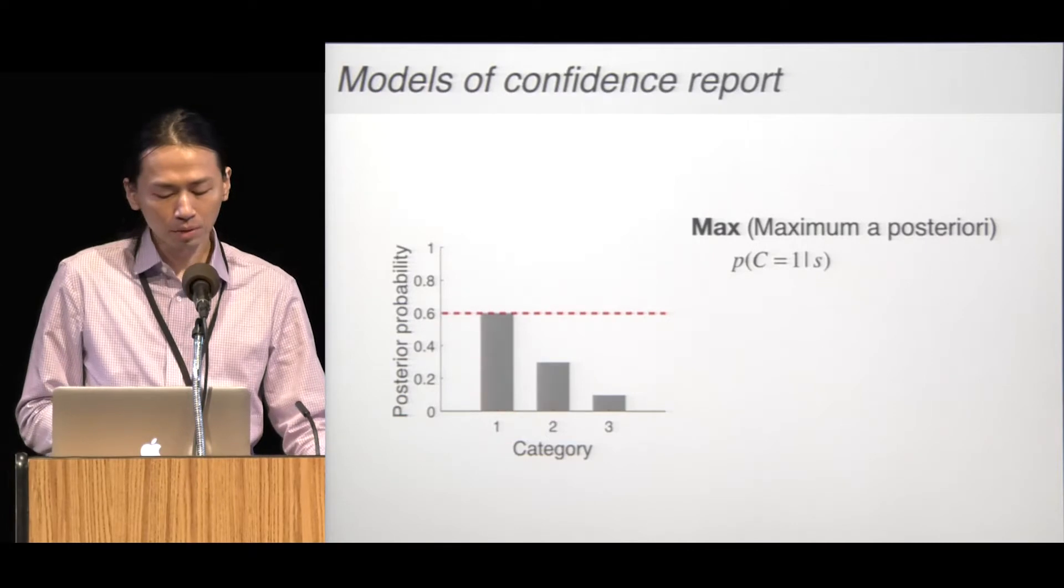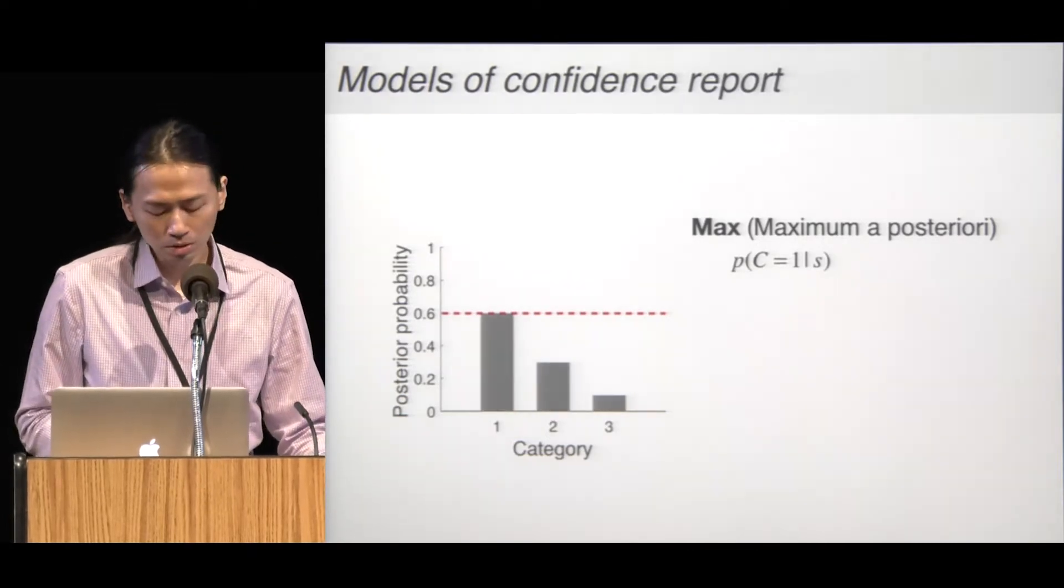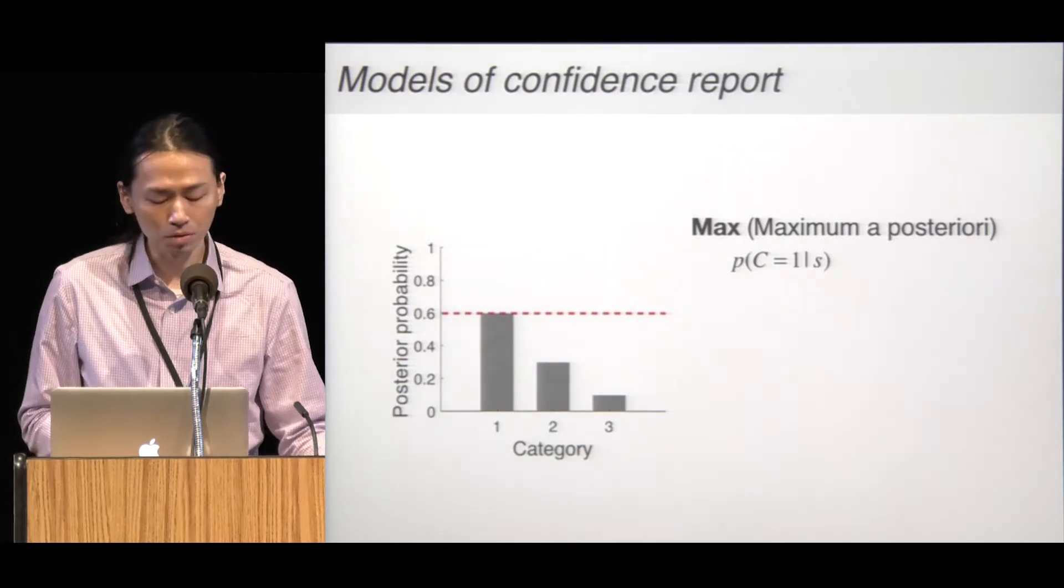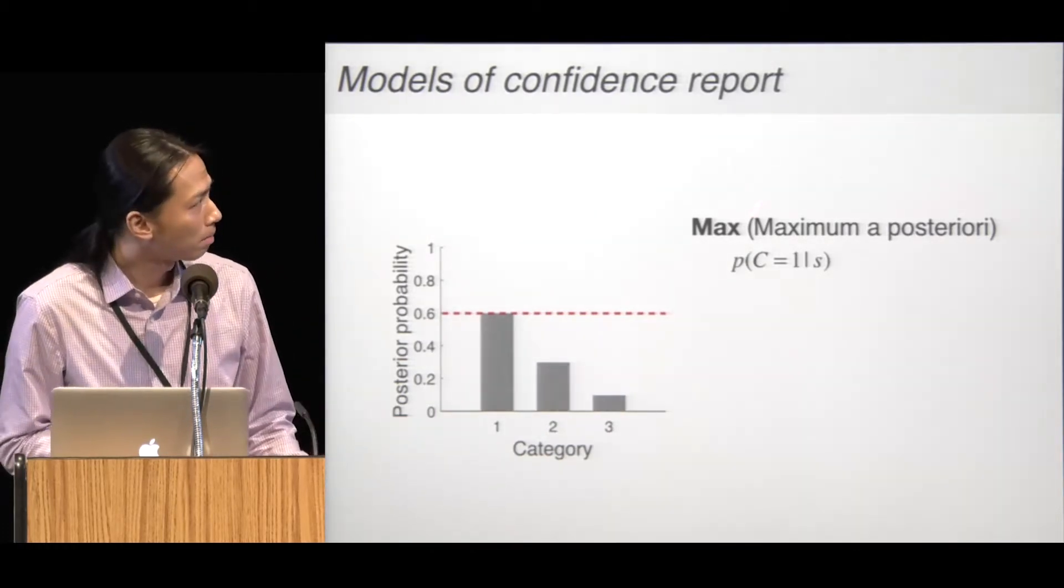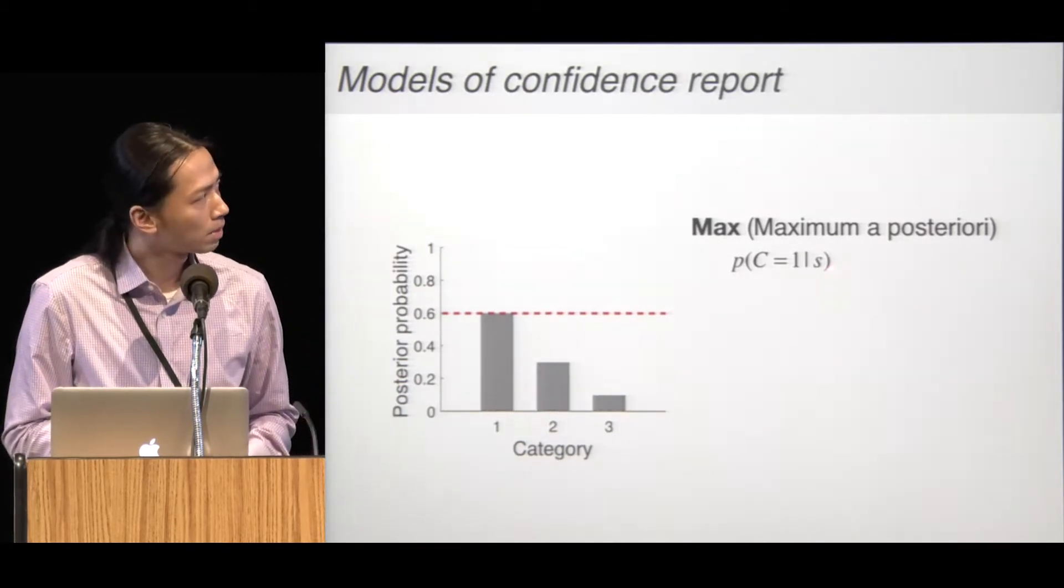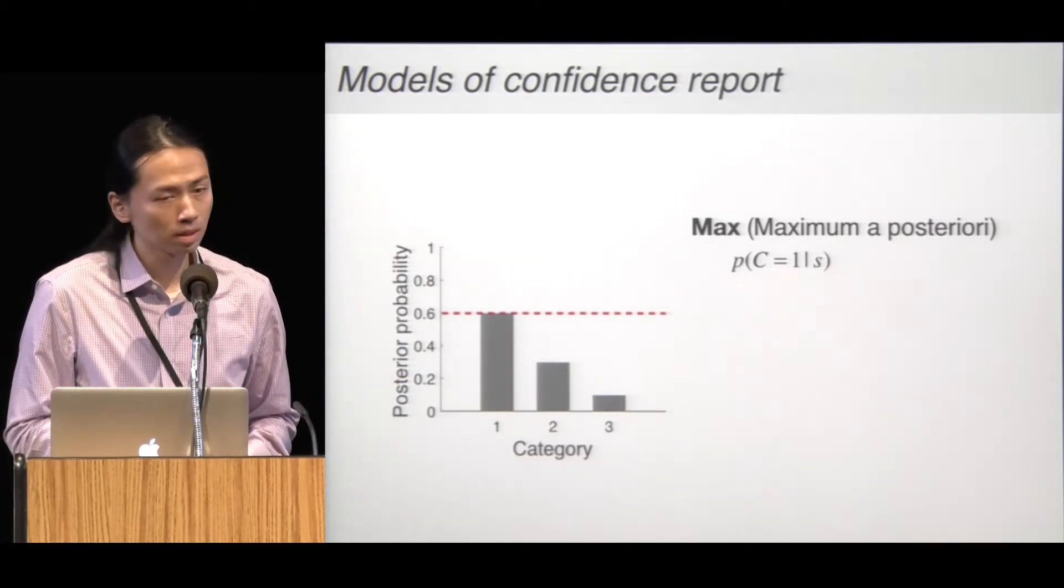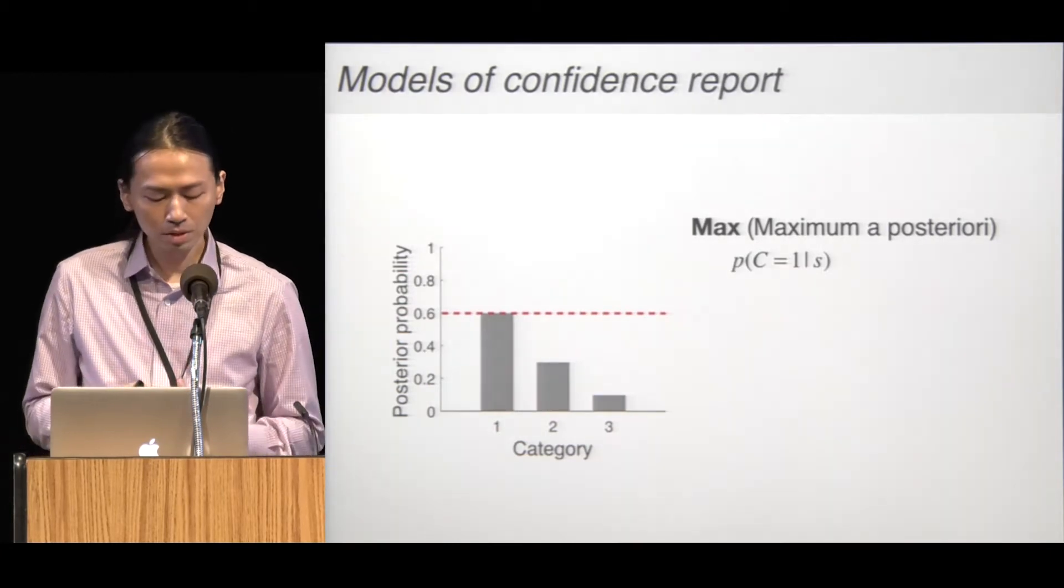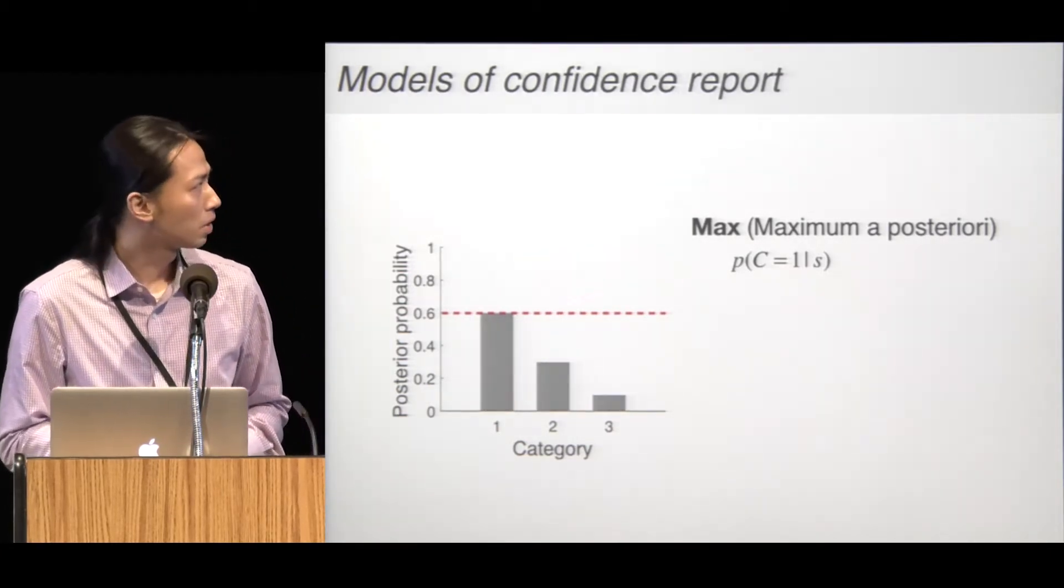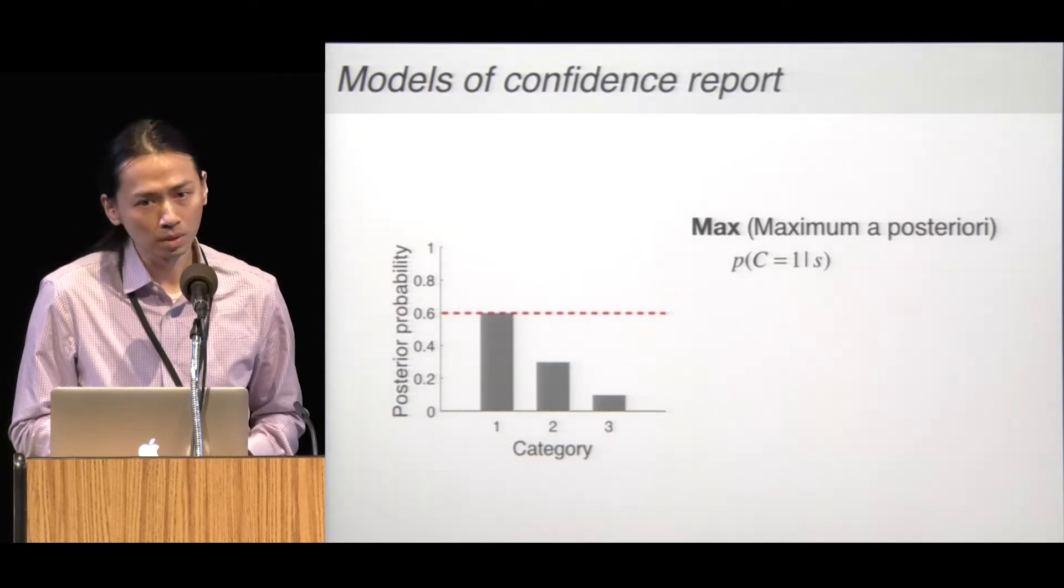In this study, we focus on a three-choice decision task, and we hypothesize three different models of confidence report. The Max model follows Bayesian confidence hypothesis, where S represents the stimulus and C represents the category. Confidence reflects the probability that the decision is correct, so it's the maximum value of the posterior.